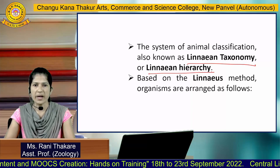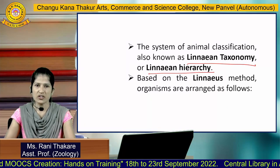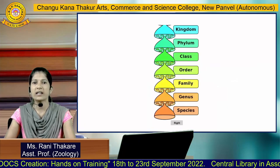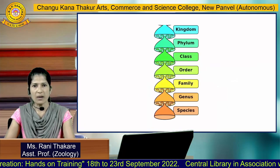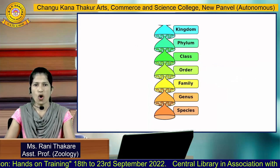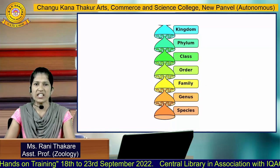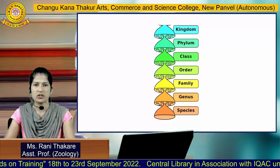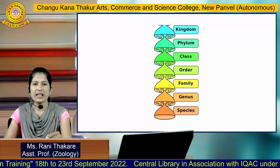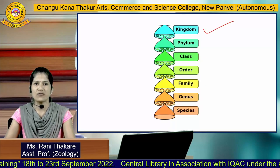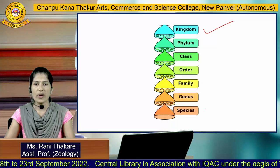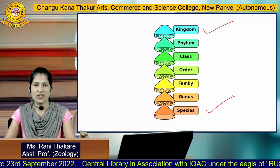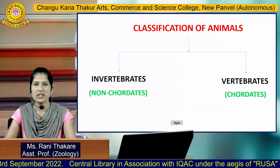Based on the Linnaean method, organisms are arranged as follows: first, kingdom; then phylum, class, order, family, genus, and species. The highest level of classification is kingdom, while the lowest level of classification is species.